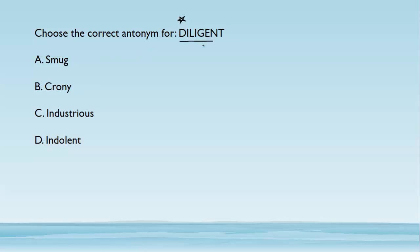Choose the correct antonym for 'diligent.' Diligent means very hardworking. The correct antonym for hardworking is someone who is lazy and does not like to work hard — such a person is 'indolent.' 'Smug' means self-satisfied. 'Crony' is a negative word used for a friend or accomplice in wrongdoing. 'Industrious' is a synonym for diligent, meaning to work very hard.